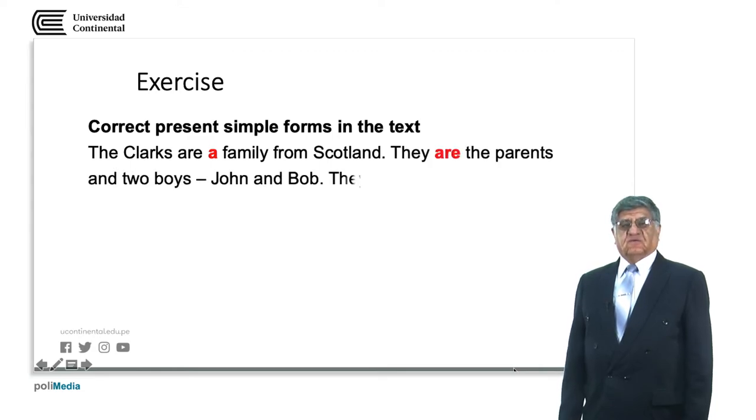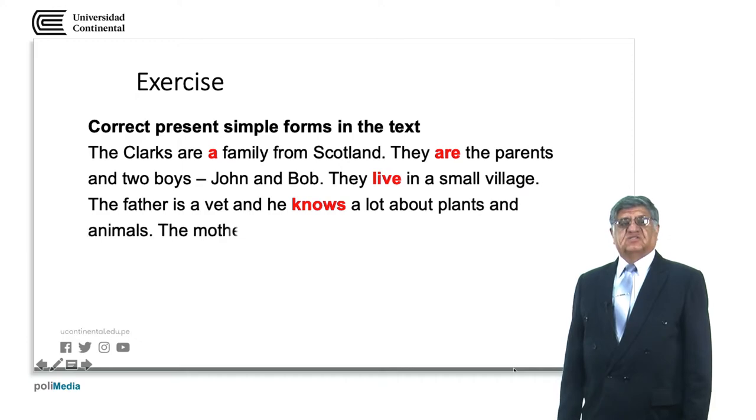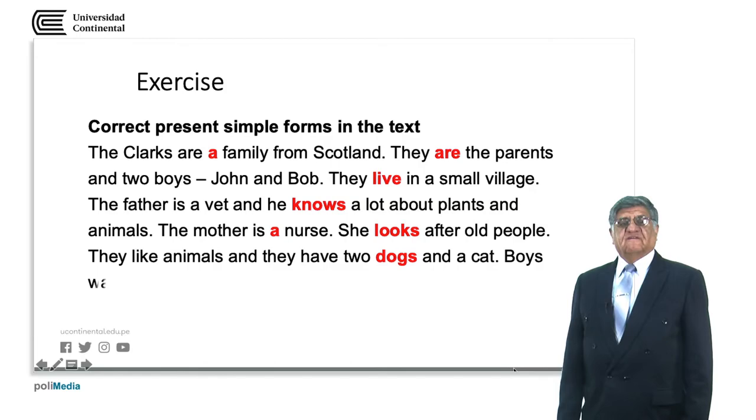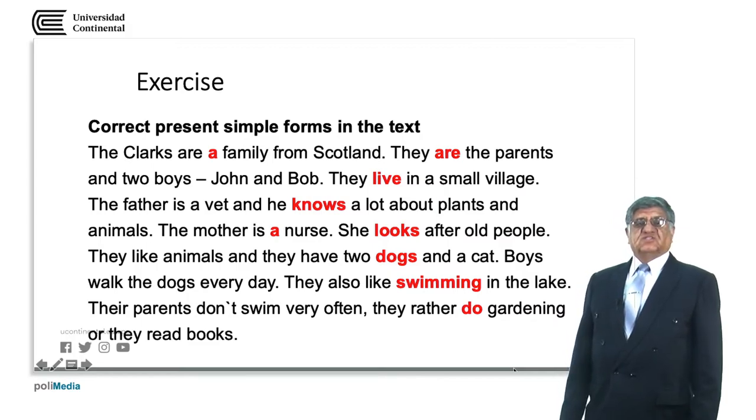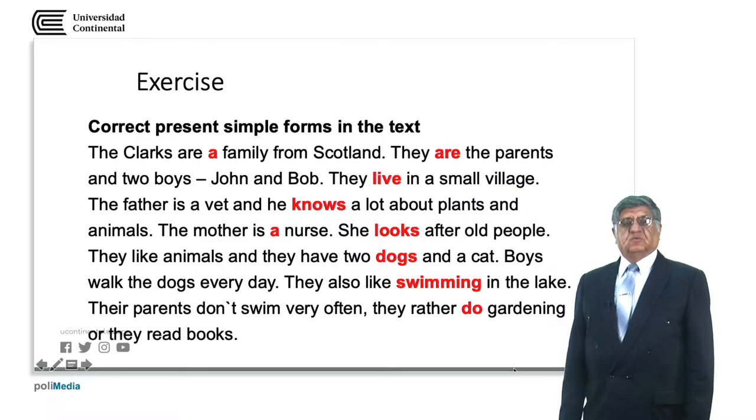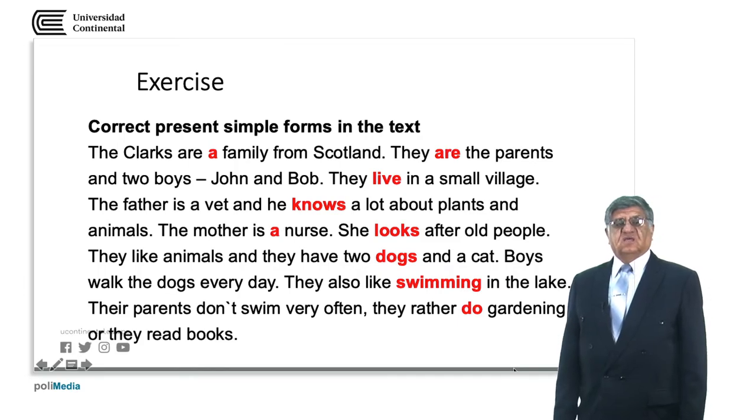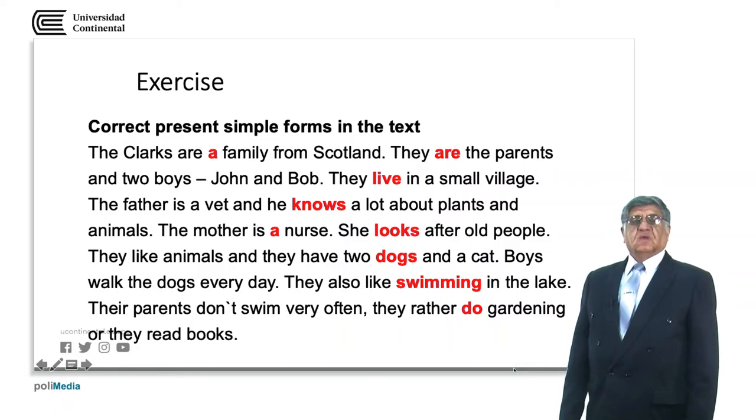Here it comes. The Clarks are a family from Scotland. They are the parents and two boys, John and Bob. They live in a small village. The father is a vet and he knows a lot about plants and animals. The mother is a nurse. She looks after old people. They like animals and they have two dogs and a cat. Boys walk the dogs every day. They also like swimming in the lake. Their parents don't swim very often. They rather do gardening or they read books. As you can see, missing words or incorrect forms of the verbs are in red.